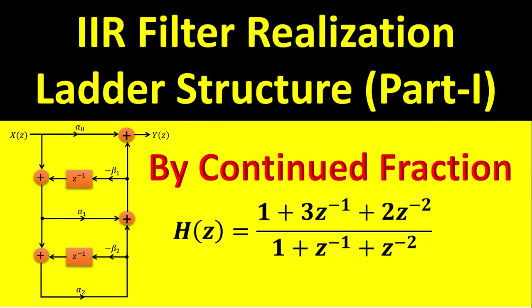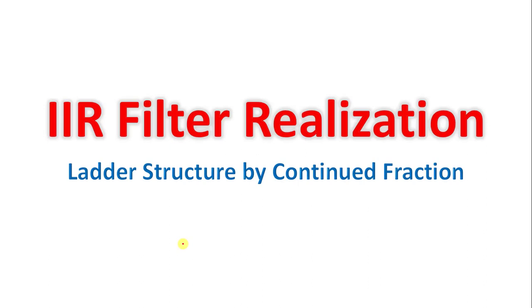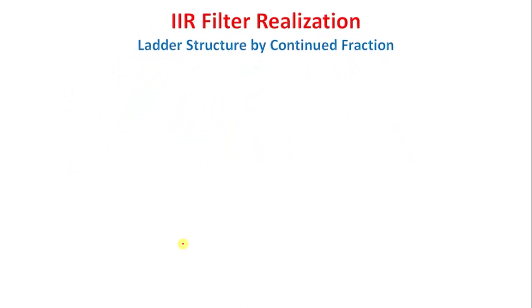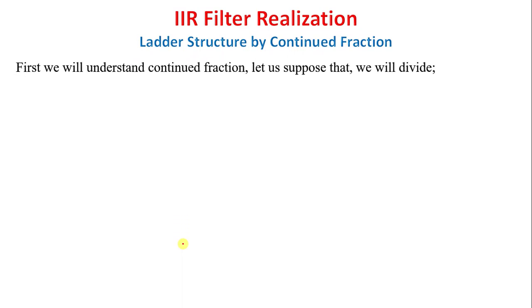Hi guys, welcome back. Today I am going to realize an IIR filter. The structure is ladder structure and the method is continued fraction. So here I am going to realize a ladder structure by continued fraction method, as per the given transfer function H(z). Let's start with the example: IIR filter ladder structure by continued fraction. First we will understand continued fraction.